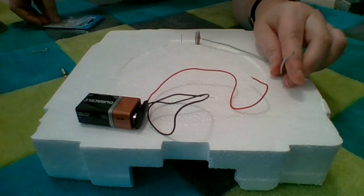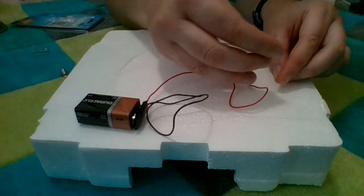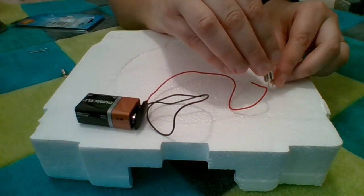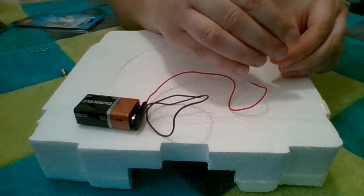Attach the other end of the wire to the bulb. I'm taking care to ensure the wires are wrapped around firmly and then push the bulb into the foam.